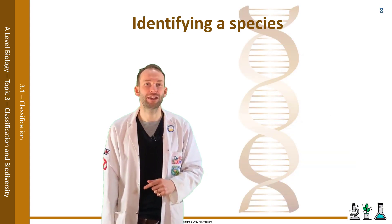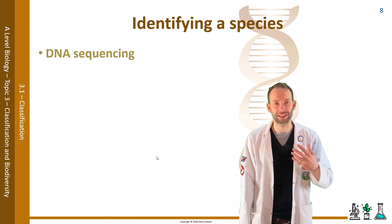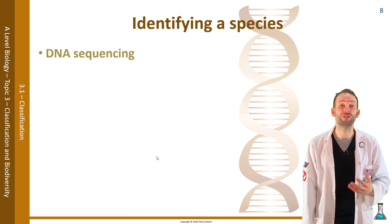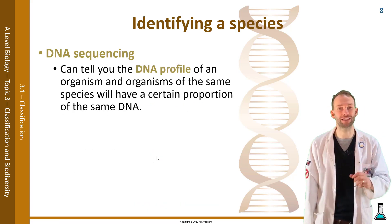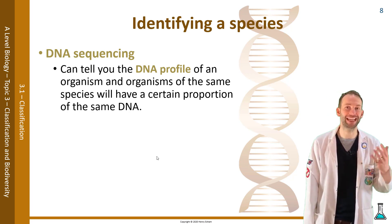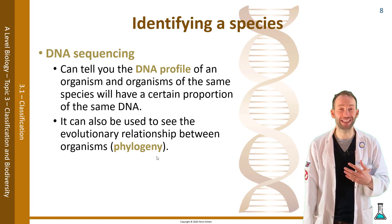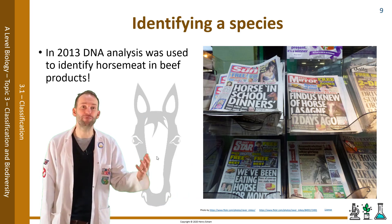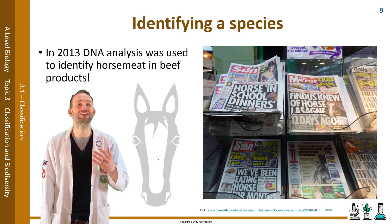Technology can help with this process. Scientists can analyze key proteins and some or all of an organism's DNA - this is what we call DNA sequencing - and it can tell you the DNA profile of an organism. Organisms of the same species will have a certain proportion of their DNA in common. It can also be used to see the evolutionary relationship between organisms, which we call phylogeny. In 2013, DNA analysis was used to identify horse meat in beef products. DNA is almost like a barcode for each species.